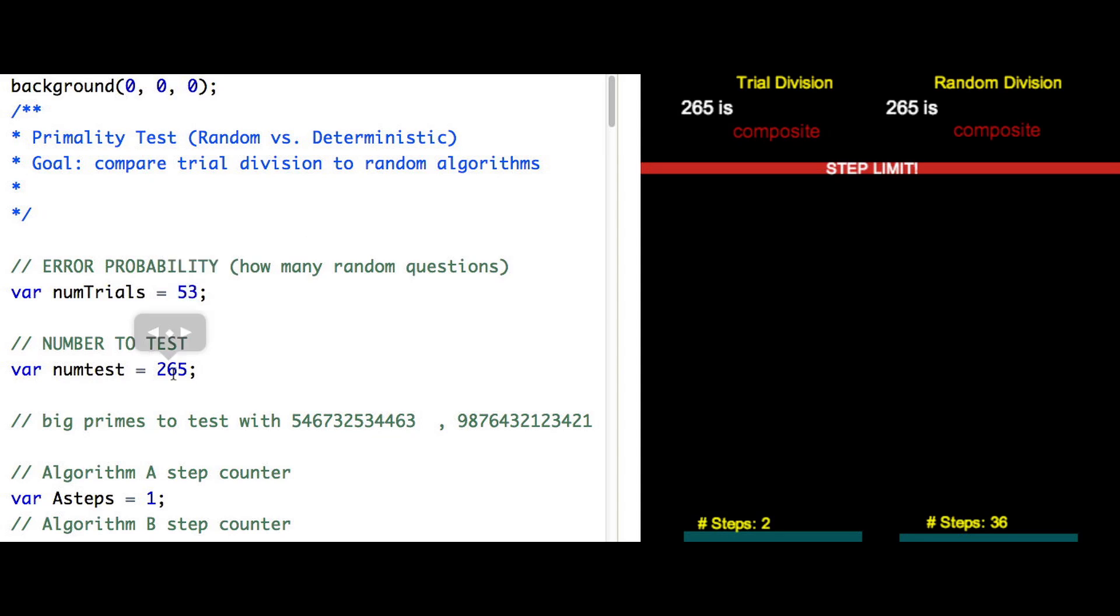When I do, the outputs match very nicely. They seem identical. But with huge input size, I need thousands of random tests for this to be accurate. So we haven't actually improved the number of steps needed. Our trial division method still seems better.